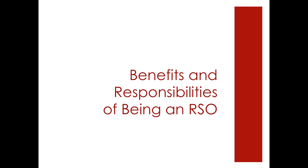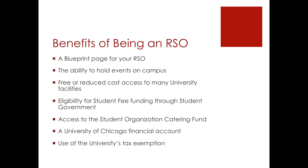You have benefits and responsibilities that come with being an RSO. In terms of your benefits, you receive a Blueprint page, the ability to hold events on campus, and oftentimes free and reduced cost access to university facilities, eligibility for student fee funding through student government, access to the Student Organization Catering Fund, a University of Chicago financial account, and use of the university's tax exemption.